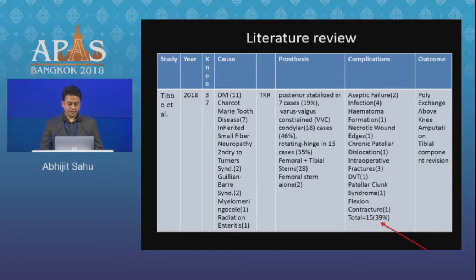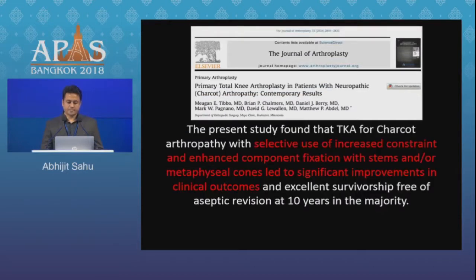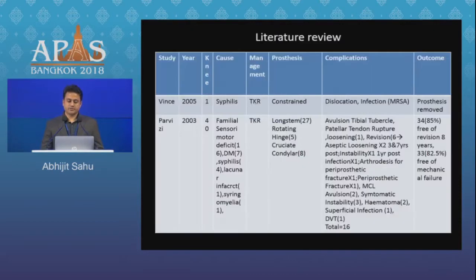Coming to the literature review, Thibault et al. recently published a paper on 37 operated knees with a complication rate of 39%. Varus-valgus constraint was used in 46% of cases, rotating hinge in 35% and posterior stabilized in 19% of cases. This study found that selective use of increased constraint and enhanced component fixation with stems and/or metaphysial cones led to significant improvement in clinical outcomes and excellent survivorship free of aseptic revision at 10 years in the majority.